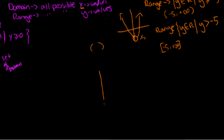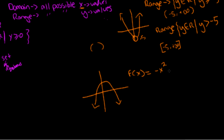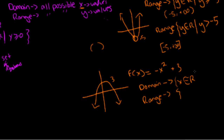Let's try: y equals f of x is equal to negative x squared plus 3. This means the vertex will be at positive 3 and the parabola opens downward. The domain stays the same — x is all real numbers. For the range: this function starts from 3 at the top, and as the y value decreases the function continues on and on. So y must be smaller than or equal to 3, meaning y is all real numbers such that y is less than or equal to 3.